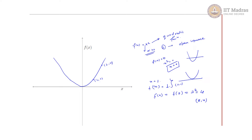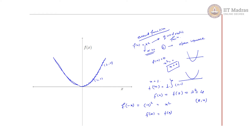At x = -1, since x squared is an even function — because f(-x) = (-x)² = x² = f(x) — even functions are symmetric about the y-axis. So the point at x = -1 is (-1, 1), which is the mirror image across the y-axis.